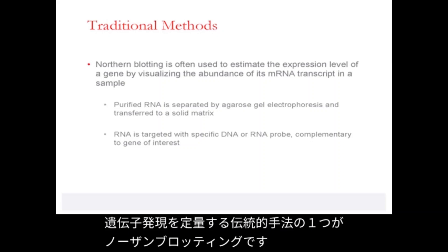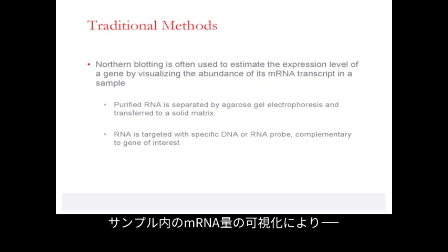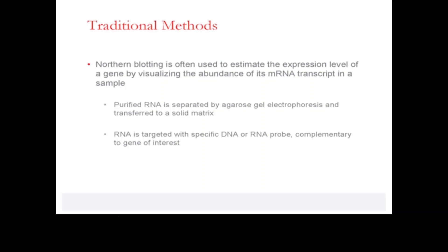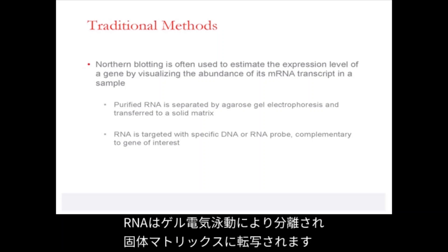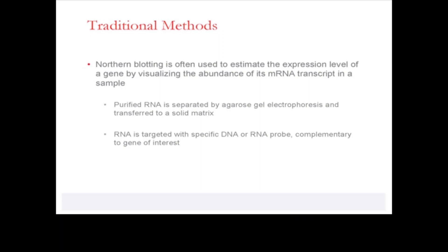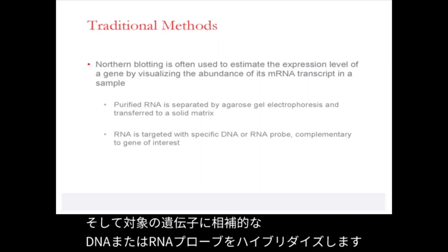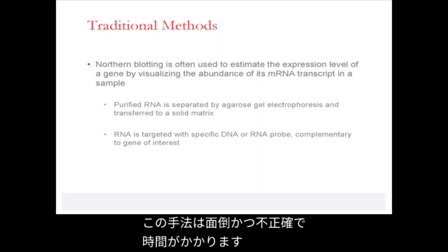One of the main traditional methods for quantification of gene expression is northern blotting, which is often used to estimate the expression level of a gene by visualization of the abundance of its mRNA transcript in a sample. The RNA is purified, separated by gel electrophoresis, and transferred to a solid matrix, which is then blotted by either a DNA or RNA-specific probe complementary to the gene of interest. This method is laborious, inaccurate, and often time-consuming.